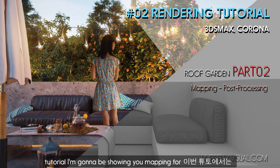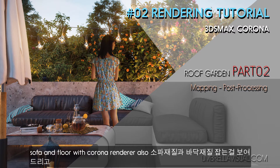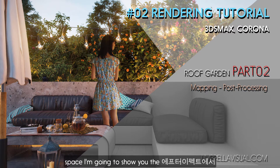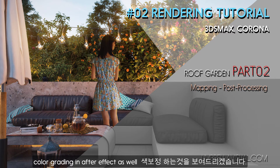In this tutorial, I'm gonna be showing you mapping for sofa and floor with Corona Render. Also, I will add some items to fill the space. I'm going to show you the color grading in After Effects as well.